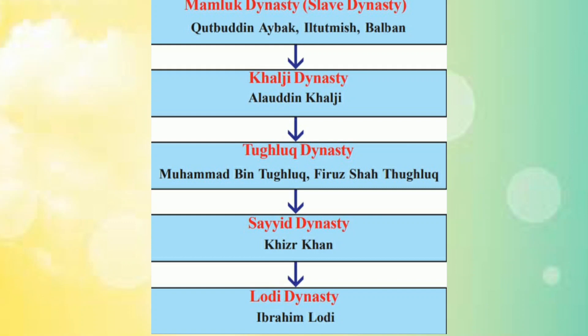After that, his dynasty was known as the Mamluk dynasty, or the Slave dynasty. This dynasty lasted until CE 1526, and that entire period was known as the Sultanate period because the kings were known as Sultans. After the Mamluk dynasty's decline, there came four major dynasties: the Khalji dynasty, ruled by Alauddin Khalji; the Tughluq dynasty, ruled by Muhammad bin Tughluq and Firoz Shah Tughluq; then the Sayyid dynasty by Khizr Khan; and then the Lodi dynasty, ruled by Ibrahim Lodi.